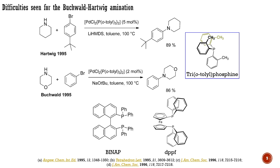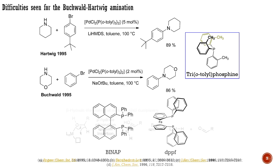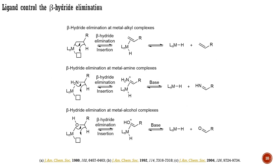BINAP was examined by Buchwald, while DPPF was tested by Hartwig. The reduced selectivity of cross-couplings for alkyl organometallics and aliphatic amines is caused by beta-hydride elimination. These unwanted side processes require a syn-conformation for the catalyst and the beta-hydrogen, which is normally suppressed by bulky monodentate ligands or chelating phosphines with large bite angles.